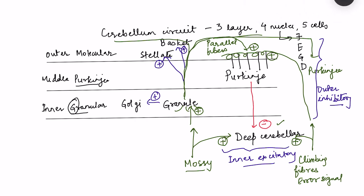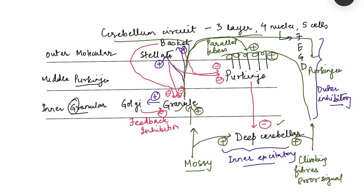The Golgi cell inhibits the granule cells, which is a feedback inhibition of the granule cells. Similarly, basket and stellate cells also inhibit the granule cells — again, feedback inhibition. Additionally, basket and stellate cells inhibit the Purkinje cells, and this is known as feed-forward inhibition.